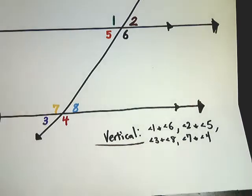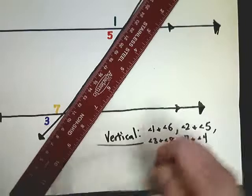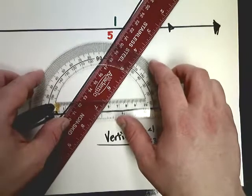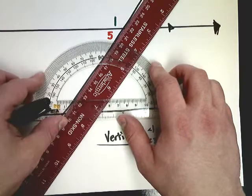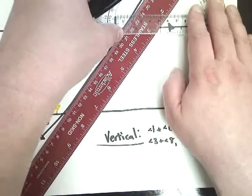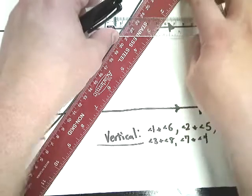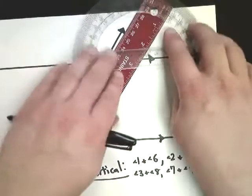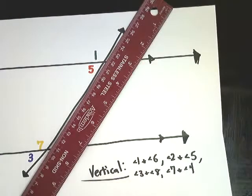Assuming these lines are parallel, if I measure an angle and it's about 55 degrees, then when I move up to the corresponding position at the other crossing and reset the protractor, it gives me 55 degrees as well. So those angles lock in as being the same.